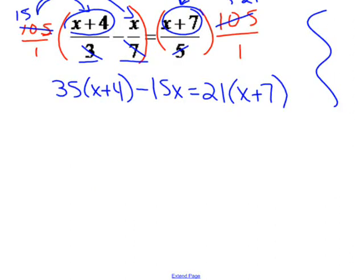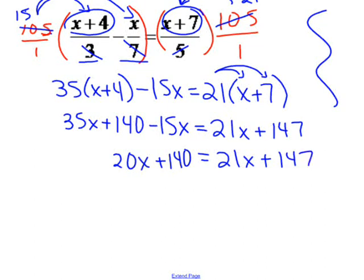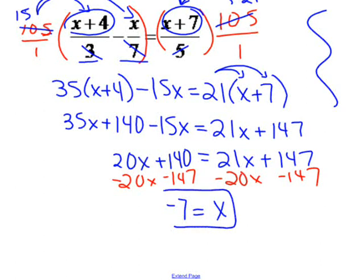Now you're back to a linear equation like you had before. You need to distribute. You need to combine like terms. So here we get 35x plus 35 times 4 is 140 minus 15x equals, and distribute again over here, 21x plus 147. Now if I combine my like terms, I have 20x over here plus 140 equals 21x plus 147. You're just using all of your basic pre-algebra skills. Subtracting 20x from both sides. Subtract 147 to get it to the other side. Negative 7 equals x. And that's it.